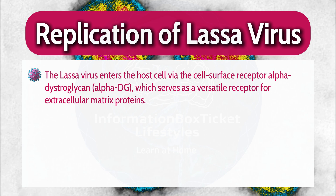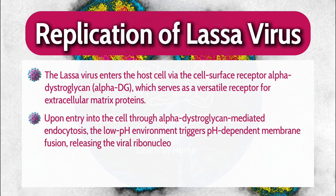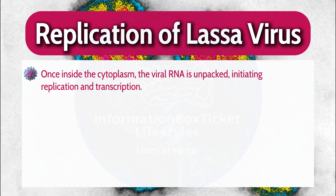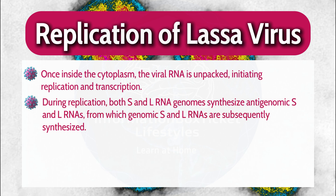Replication of Lassa Virus. The Lassa virus enters the host cell via the cell surface receptor alpha-dystroglycan, which serves as a versatile receptor for extracellular matrix proteins. Upon entry through alpha-dystroglycan-mediated endocytosis, the low pH environment triggers pH-dependent membrane fusion, releasing the viral ribonucleoprotein complex into the cytoplasm. Once inside the cytoplasm, the viral RNA is unpacked, initiating replication and transcription. During replication, both S- and L-RNA genomes synthesize antigenomic S- and L-RNAs, from which genomic S- and L-RNAs are subsequently synthesized.